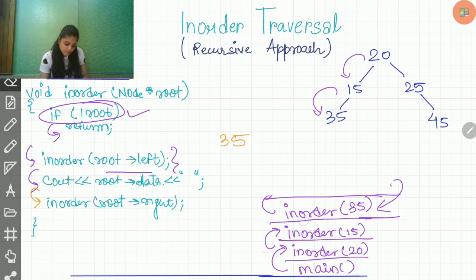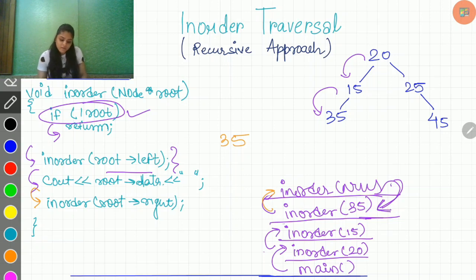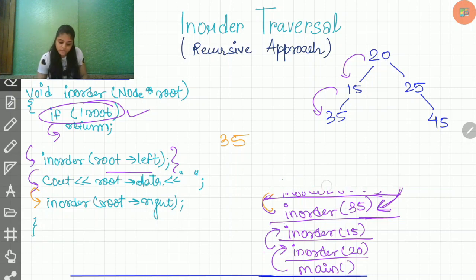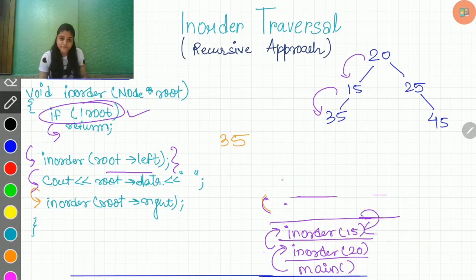And again, this will call the root.right in-order, which is again null. So again, this will return and the control will come back to this function. And now if you see, we have already executed this part as well. So this will get removed from the stack as well, as this function will get removed from the stack as it has done its work. Now the control is back to the function with value 15.